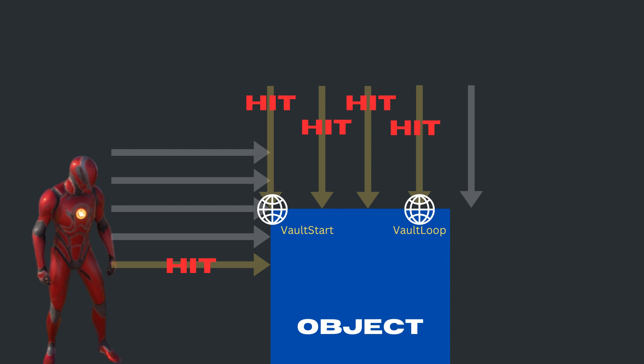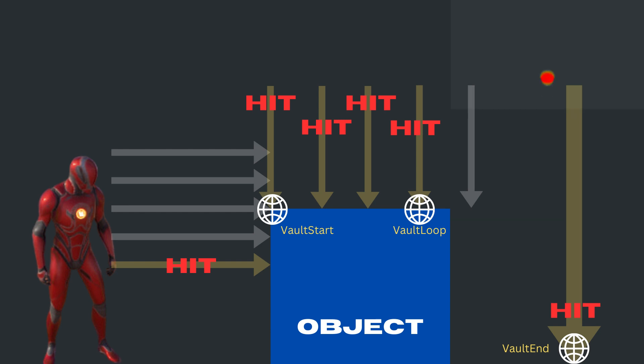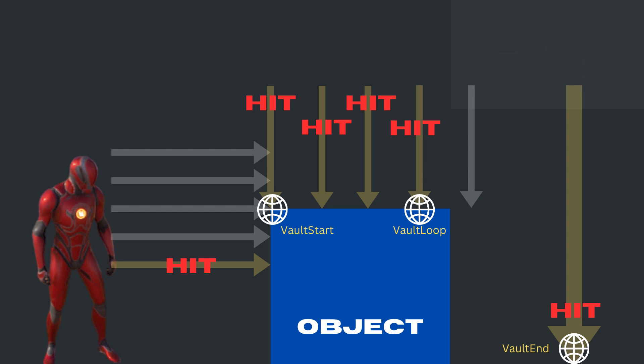When the trace hit stops, it means the object end is reached. We need a Vault end point or the landing position. For this, we will do a line trace a little apart from the last spear trace which did not hit. The hit location on the land will be the Vault end point. These three points will be fed to the motion warping component to achieve the Vault action. We will look into the implementation of this in the next video.